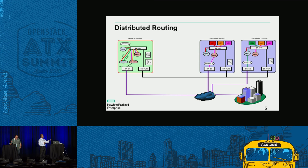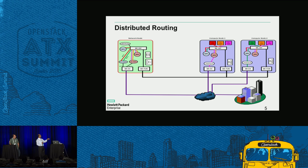The event that triggers router creation is a DVR serviceable port — for example, a VM port, an LBaaS port, or a DHCP port. When such a port appears on a compute node, the L2 agent communicates to the Neutron server, which instructs the L3 agent to create a local router. Traffic between VMs on the same node is then routed locally without going to the network node.